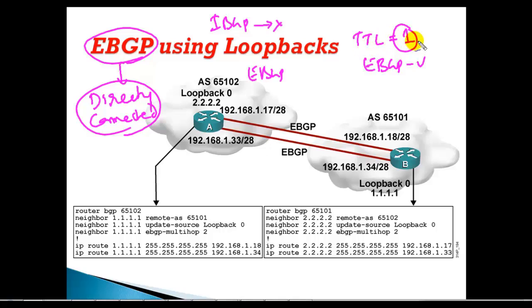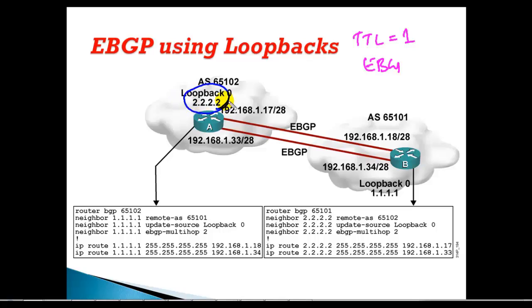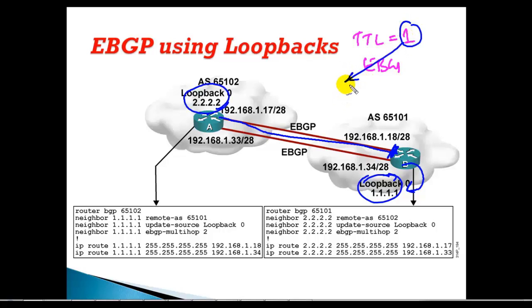Because of that default TTL of one hop, Router A forming neighborship with Router B via loopback won't work by default, since the loopback is more than one hop away. If you look at the topology, one hop ends at the directly connected interface — the loopback is further than that, so we need to increase the TTL value.